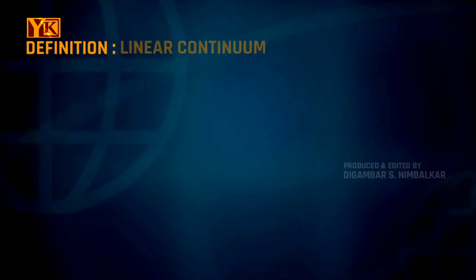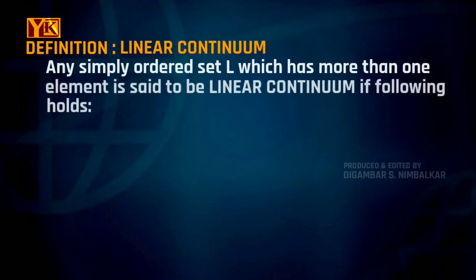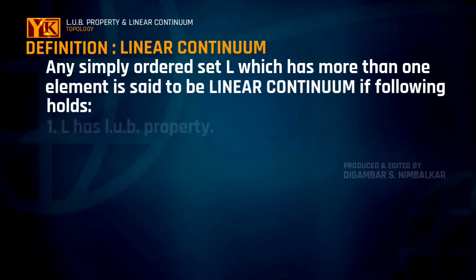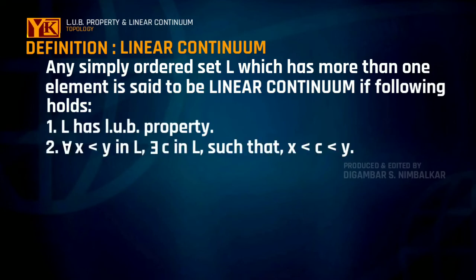Now we will look at another definition: linear continuum. Any simply ordered set L which has more than one element is said to be a linear continuum if the following properties are satisfied. First, the set L has the least upper bound property. Second, for any two elements x less than y, there must exist some c such that x < c < y.